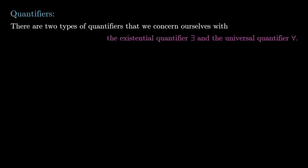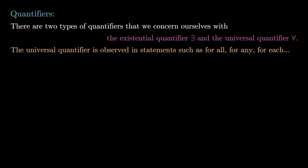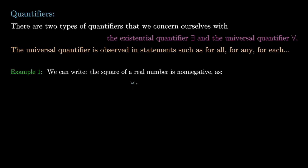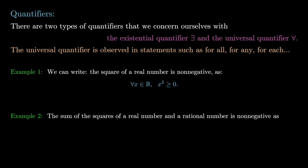There are two types of quantifiers: the existential quantifier, given by the backwards capital E symbol (∃), and the universal quantifier, given by the upside-down A symbol (∀). The universal quantifier appears in statements such as 'for all,' 'for any,' 'for each,' and so on. For example, to write that the square of a real number is non-negative: for all x in ℝ, x² ≥ 0. Similarly, for the sum of squares of a rational and real number: for all x in ℝ and for all y in ℚ, x² + y² ≥ 0.